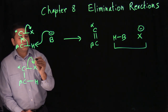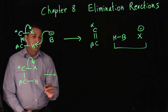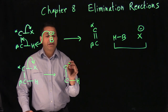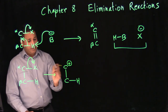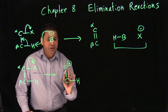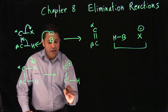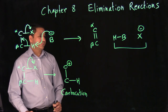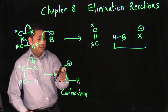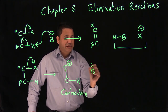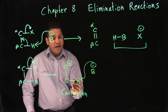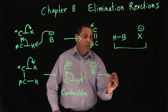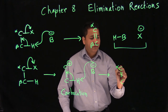In the second mechanism, the leaving group leaves first, creating a carbocation — this should sound familiar. That is step one: formation of a carbocation. In step two, the base comes in and picks up the hydrogen, then that bond flips between alpha and beta to give you the required product.